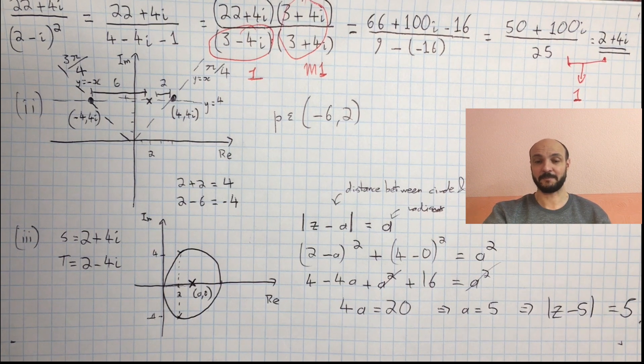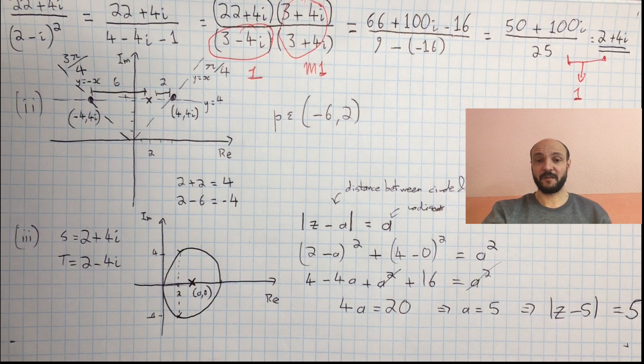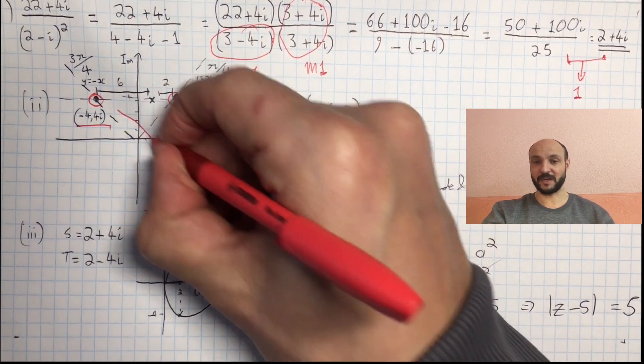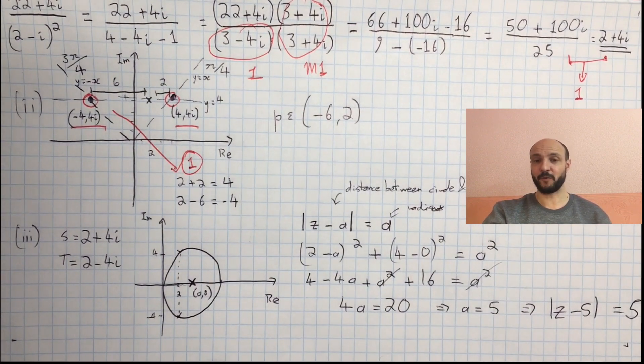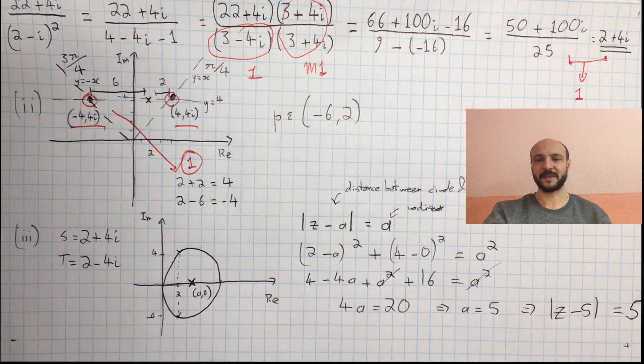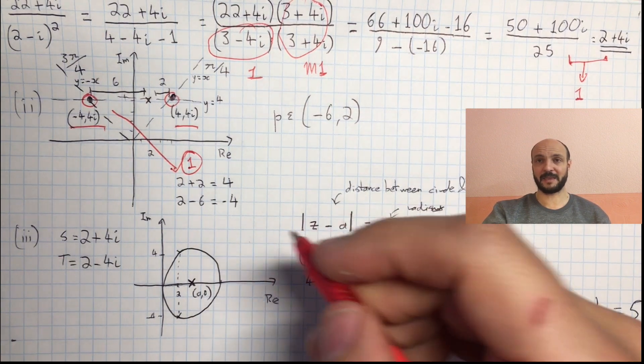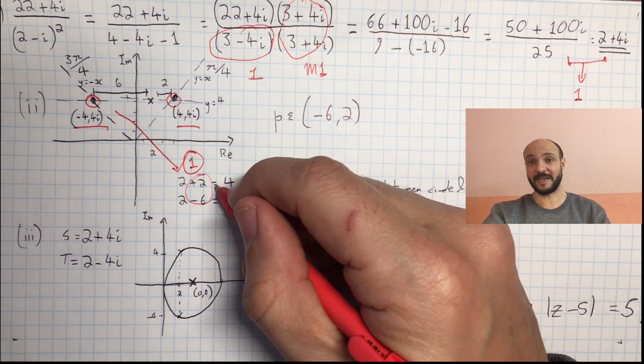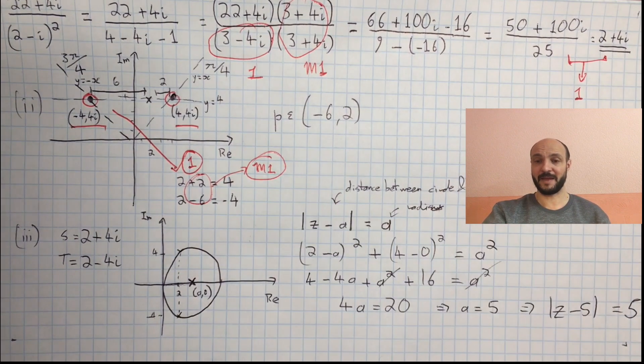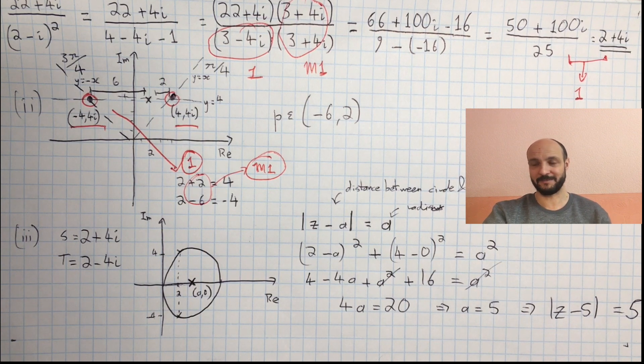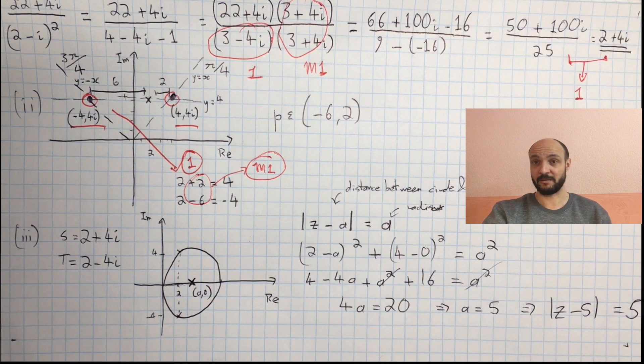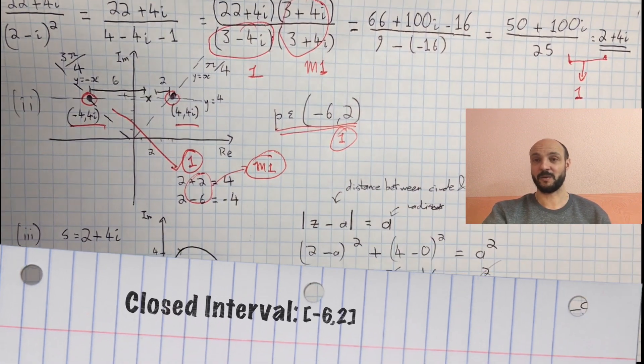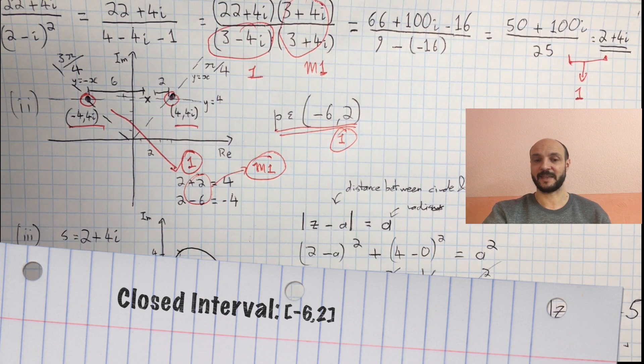In the second part we get the first mark for correctly identifying where our two limiting points intersect with our given points. So finding minus 4, 4i and 4, 4i as these two limiting coordinates there. And our second point is a method mark for using some method like we used but looking at our horizontal line there and seeing how many we need to add x and subtract x. There's one method mark for an appropriate method that would find you the 2 and the 6 even if maybe you accidentally think it's 1 and 6 and get the wrong answer. So you still get two marks all together in this part. And then your third part is for correctly stating that p belongs to an open interval from minus 6 to 2. Which you could also write as minus 6 is less than p is less than 2 and still get the mark.